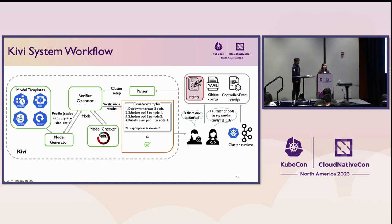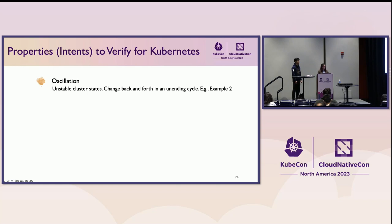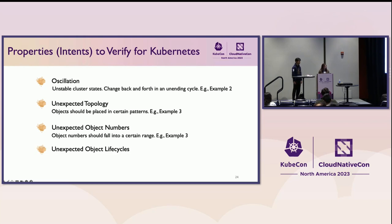What exactly does Kiwi verify? Through the failure study, we summarize four main intent categories. First, there should not be any oscillation — the cluster shouldn't change back and forth in circles; example two violates this. Second, there should not be unexpected topologies — pods need to be placed in a certain pattern, otherwise vulnerable to failures; example three violates this. Third, there should be no unexpected object numbers — pods need to stay within a certain range, not too many wasting resources or too few affecting capacity; example three also violates this. Fourth, there should be no unexpected object life cycles — pods need to be stable and scheduled; examples one and two violate this.